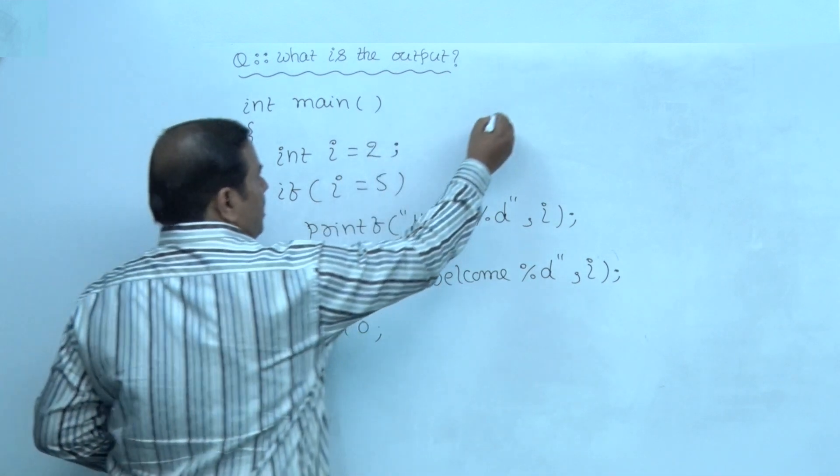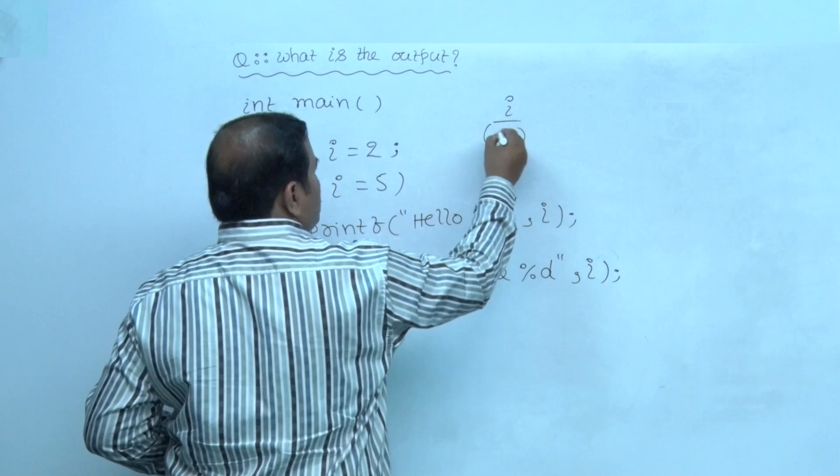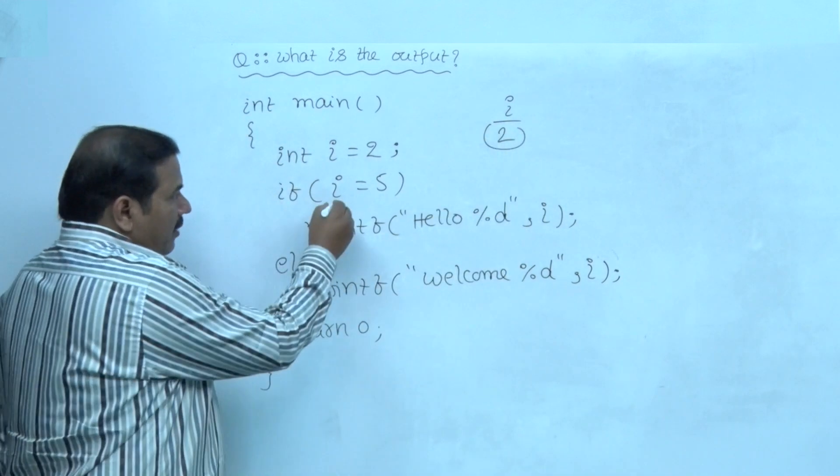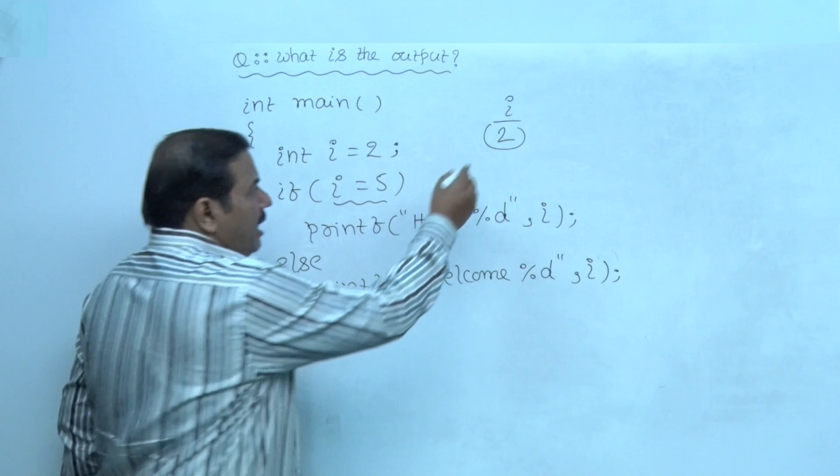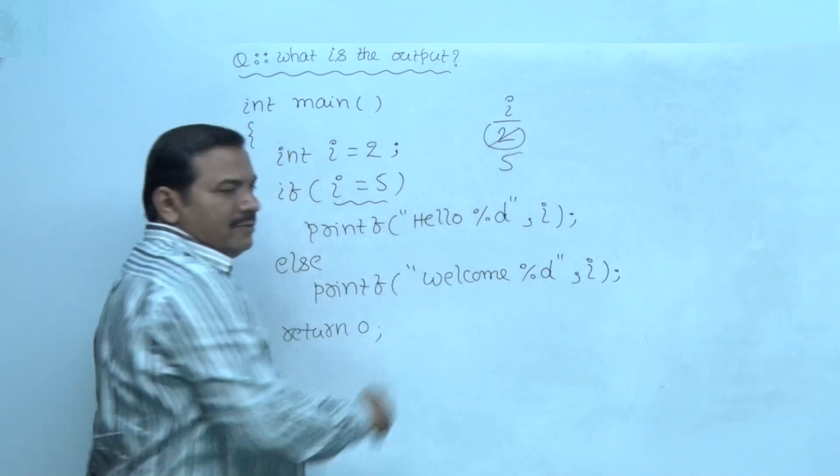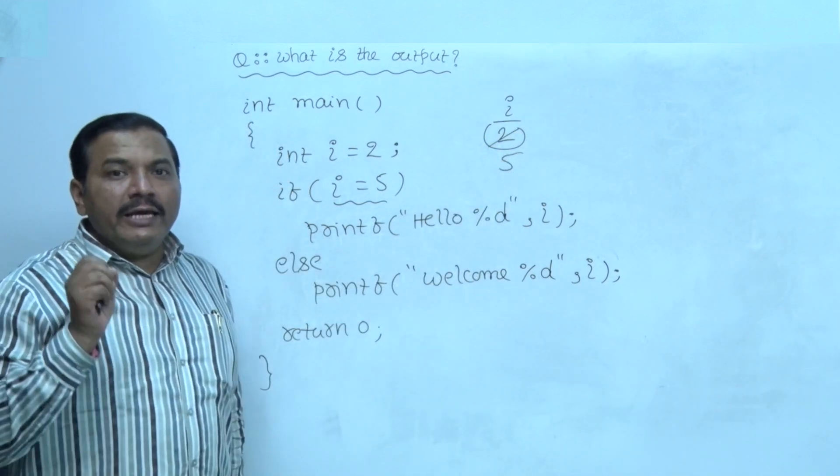Here initially the value of i is given as 2. After evaluating this expression, i value modified as 5. Now the value of i is 5.